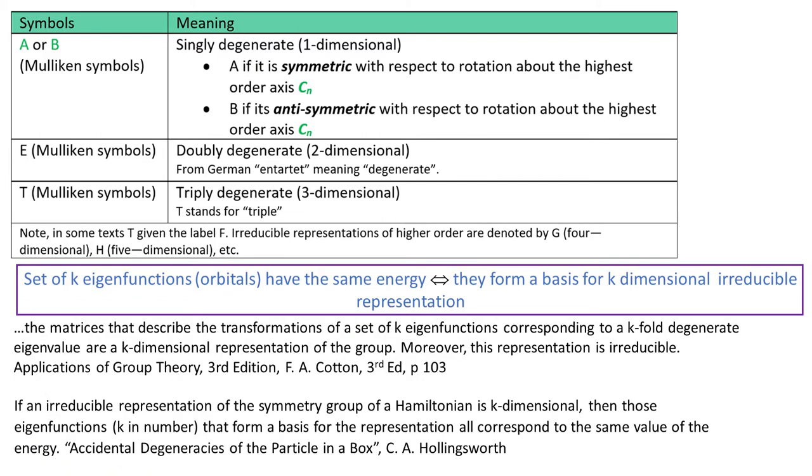And now, if a k set of orbitals have the same energy, then they form a basis for a k-dimensional irreducible representation. It goes both ways. If a set of k orbitals form a basis for a k-dimensional representation, then they have the same energy.